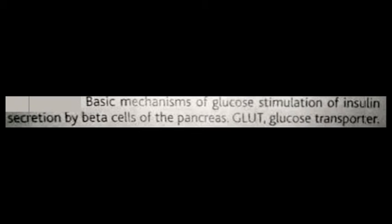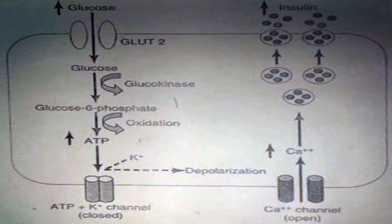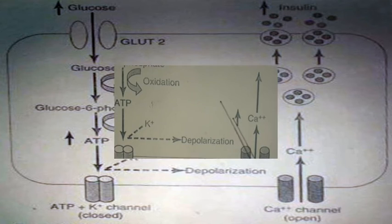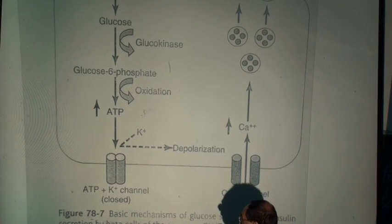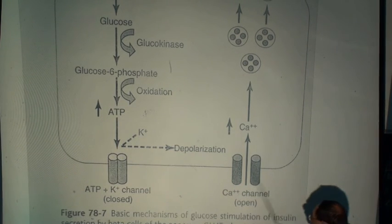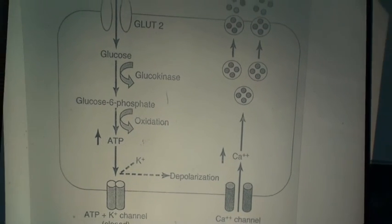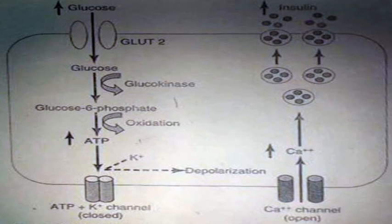The basic mechanism of glucose stimulation of insulin secreting by the beta cells of the pancreas. And this is the activation of glucose transport. Just now we see the most important stimulus for the insulin secretion is the glucose. You see glucose is metabolized, ATP increases, potassium channels close, depolarization, increasing calcium. Then the insulin secretion. You remember the release of acetylcholine from the nerve ending, almost similar mechanism.